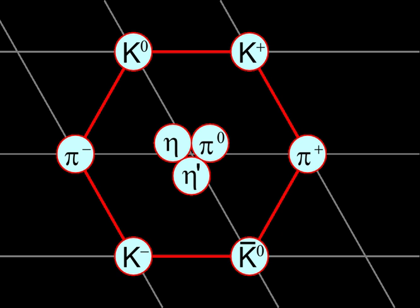Classified by speed: a tardyon or bradyon travels slower than light and has a non-zero rest mass. A luxon travels at the speed of light and has no rest mass. A tachyon is a hypothetical particle that travels faster than the speed of light and has an imaginary rest mass.